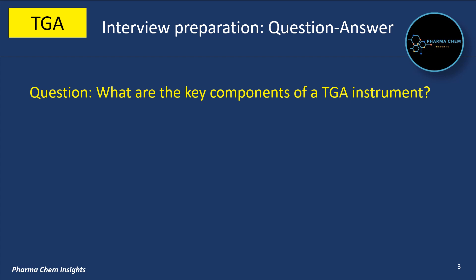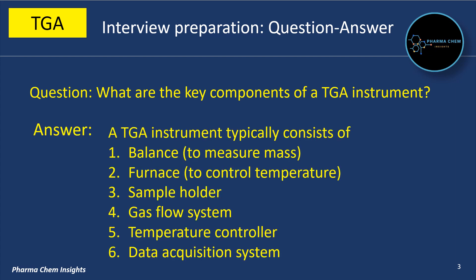What are the key components of a TGA instrument? A TGA instrument typically consists of a balance to measure mass, a furnace to control temperature, a sample holder, a gas flow system, a temperature controller, and a data acquisition system.